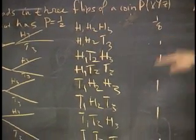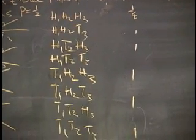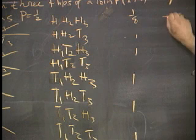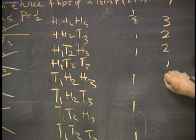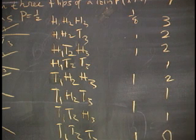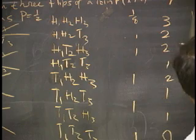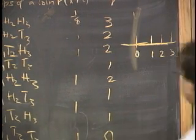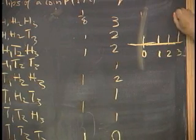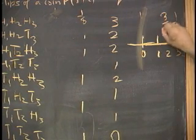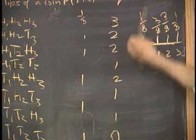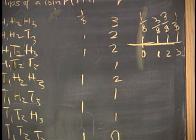So who can tell me what the values of R are here? The values are zero, one, two, and three. For three it's one-eighth, for two it's three-eighths, for one it's three-eighths, and for zero it's one-eighth. You probably could have predicted that too because of the symmetry in the problem — it's symmetric about that axis.